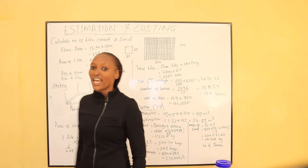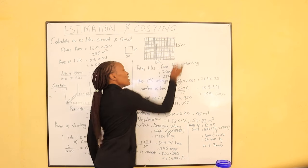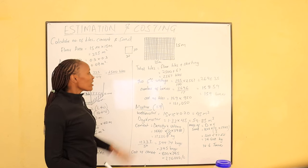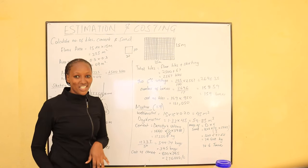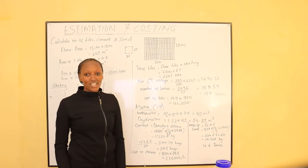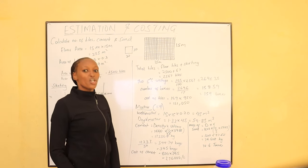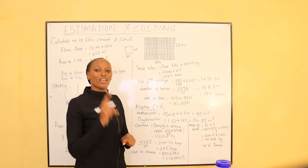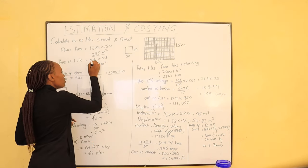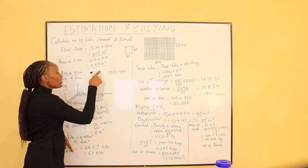The area we shall be considering for our tiling today is a room of 15 meters by 15 meters. The total area is 225 square meters. One tile is 30 centimeters by 30 centimeters, which in meters is 0.3 by 0.3 meters. To get the number of tiles required for the floor, we take the total floor area divided by the area of one tile. The area of one tile is 0.3 × 0.3 = 0.09 square meters.